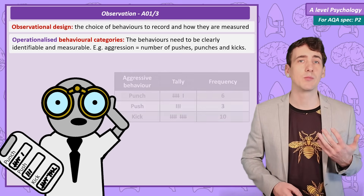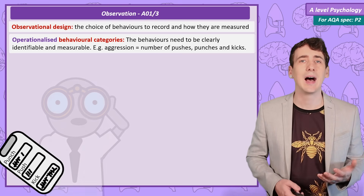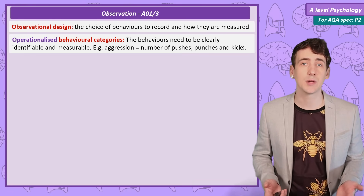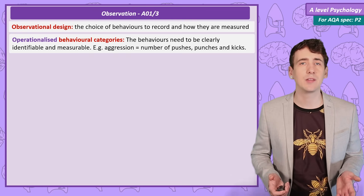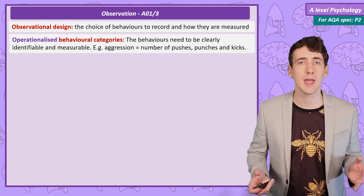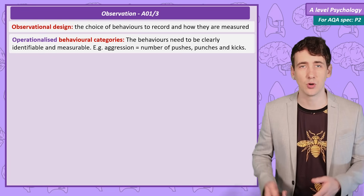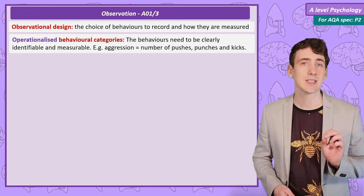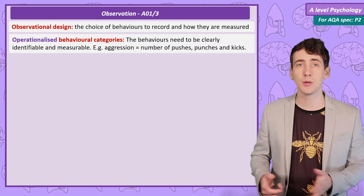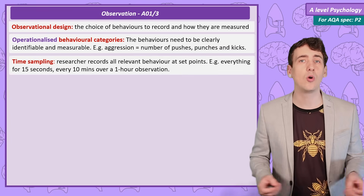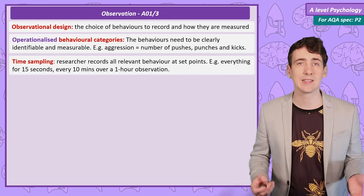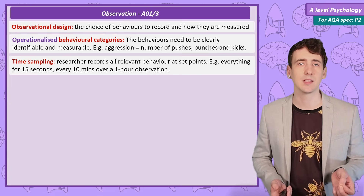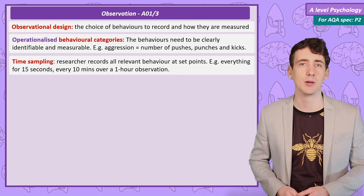Now I know what behaviours I am recording, I need to consider how I will record them. In my observation, especially of large groups, it would be very difficult to create a full record of all behaviour that happens. The researcher can choose a technique called time sampling, where over the course of an observation the researcher records behaviour at set points — for example, observing each participant for 15 seconds every 10 minutes over the course of an hour.